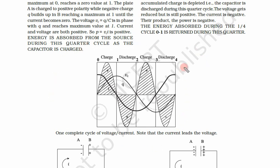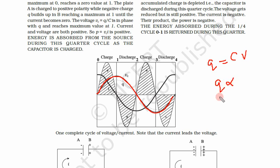With the help of this graph we understood how the phase difference between voltage and current gives zero power consumption in a complete cycle for a capacitor. For a capacitor, Q is equal to CV, so Q is proportional to voltage. When voltage increases, the charge on the capacitor also increases, and when voltage increases on the other side, charge increases on the other side as well.